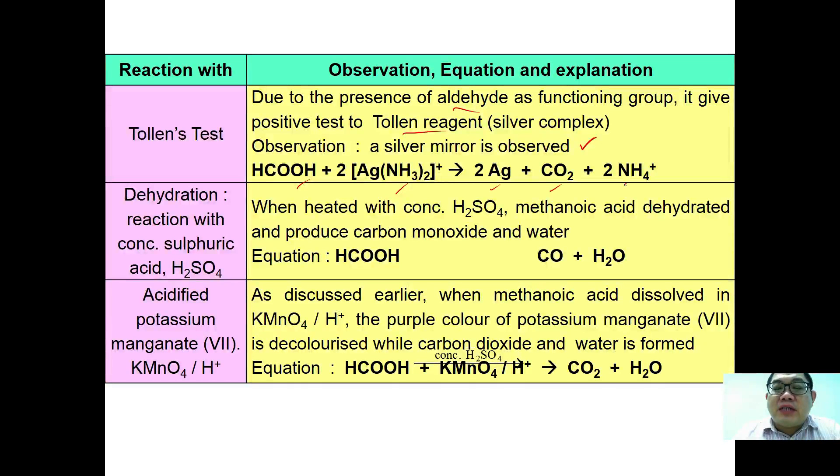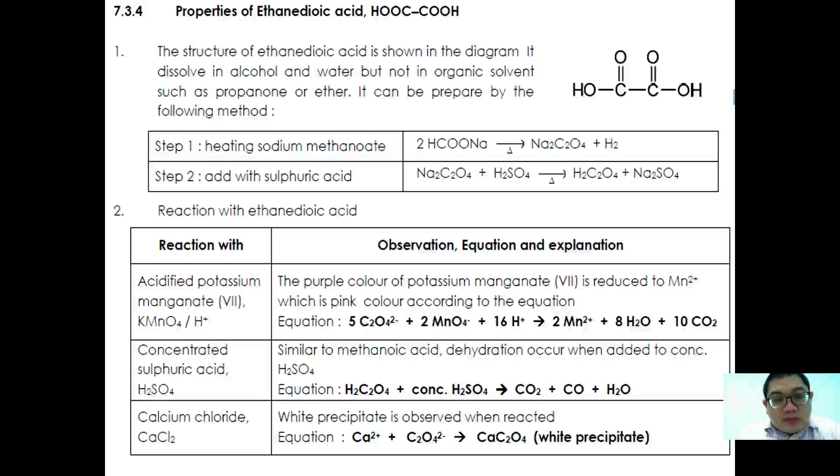Methanoic acid can also undergo dehydration when you use concentrated sulfuric acid. It will dehydrate to become carbon monoxide plus water. Finally, as discussed earlier, methanoic acid is a strong reducing agent, so it can be oxidized by using hot concentrated acidified potassium manganate to form carbon dioxide and water.